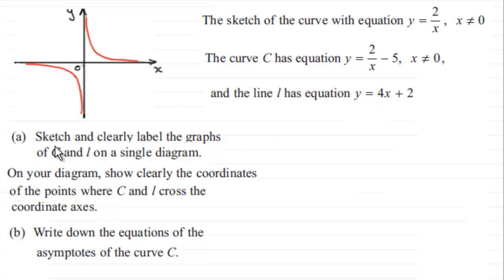In the first part we're asked to sketch and clearly label the graphs of C and L on a single diagram. On our diagram we've got to show clearly the coordinates of the points where C and L cross the coordinate axes. In the second part we've got to write down the equations of the asymptotes of the curve C. So if you'd like to give this a go, just pause the video, come back when ready and you can check your solution with mine.